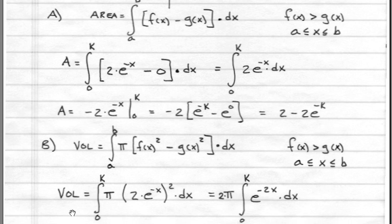Our formula, when we fill in terms, becomes volume is equal to the integral from 0 to k of pi times 2 times e to the minus x squared times dx.